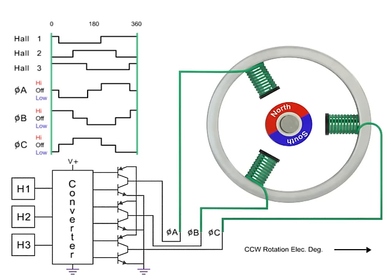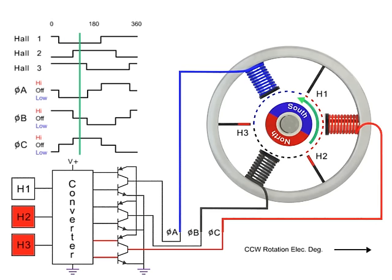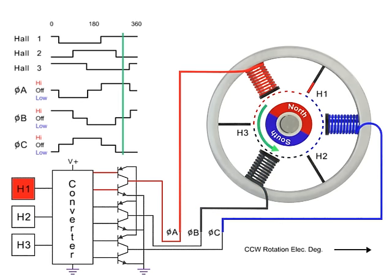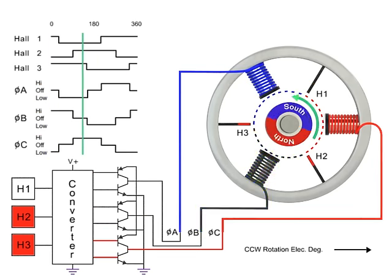The sequence is further explained when the Hall effect sensors turn on. Coils are energized by the converter. The coils alternate in order, creating the magnetic field to turn the rotor. The sequence is repeated with the next set of Hall effect sensors and coils to continue rotation.